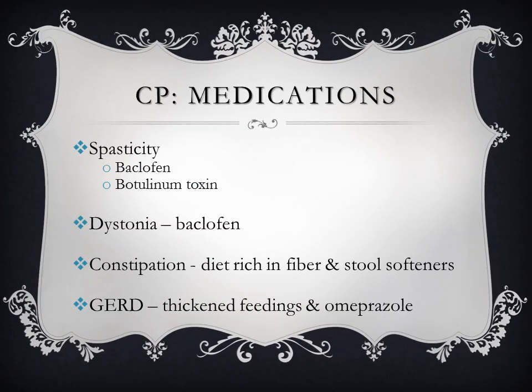Specific problems also need to be addressed. Spasticity of limbs is treated with baclofen, a GABA agonist, and intramuscular injection of botulinum toxin, which is an exotoxin produced by Clostridium that prevents release of acetylcholine at the neuromuscular junction. Dystonia in dyskinetic cerebral palsy may also respond to baclofen. Constipation is managed with a diet rich in fiber and stool softeners. Patients with gastroesophageal reflux disease may respond to thickening of feeds or use of an anti-reflux formula, and proton pump inhibitors such as omeprazole are effective in reducing gastric acidity and improving erosive esophagitis.